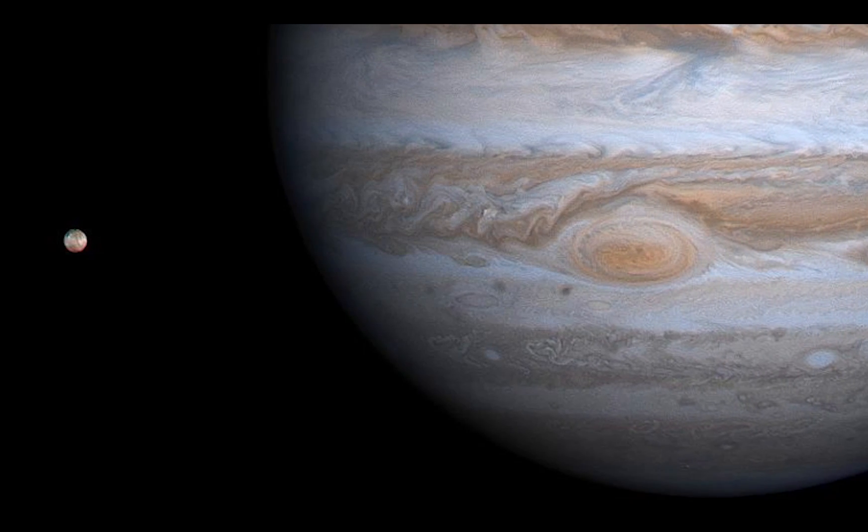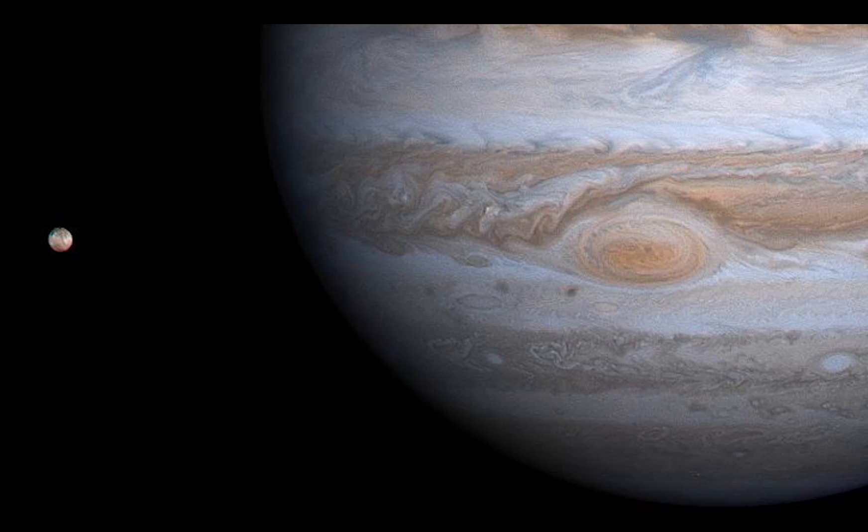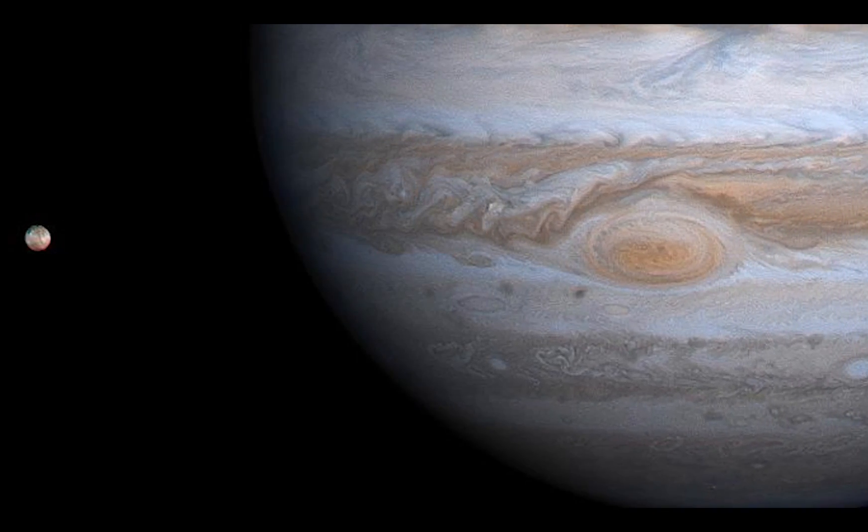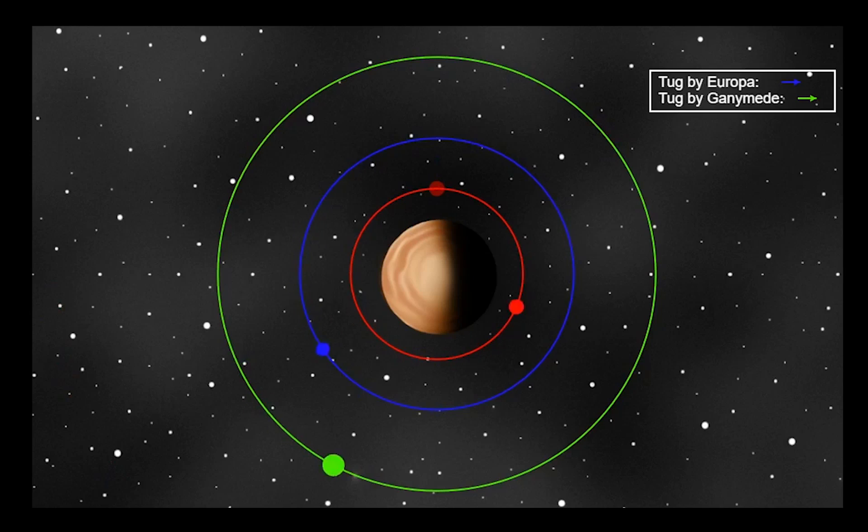So why does Io stay in an elliptical orbit? Astronomers would expect that its orbit would become circular over time. It has to do with orbital resonances with the other moons.